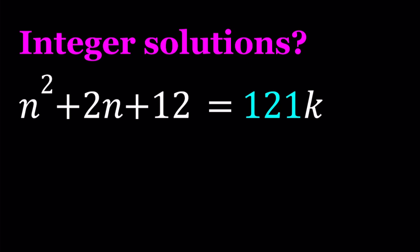Obviously n and k are integers, so we have n squared plus 2n plus 12 which is quadratic and on the right hand side we have 121k which is a multiple of 121. I'll be presenting two methods and let's start with the first one.